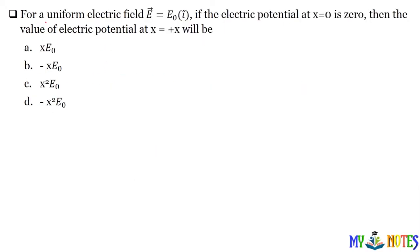Next question: for a uniform electric field E, if the electric potential at x equal to 0 is 0, then the value of electric potential at x equal to plus x will be? Electric field di rakhi hai aur potential pooch raha hai. Dono mein relation kya hai? E is equal to minus dV upon dr. To aap likh sakte hain: dV is equal to minus E dot dr. Potential scalar hota hai.